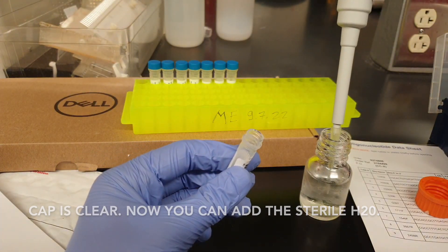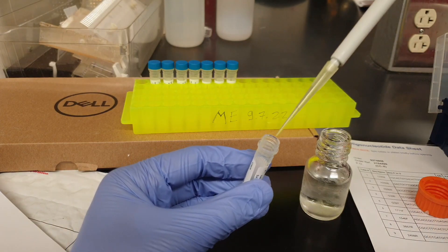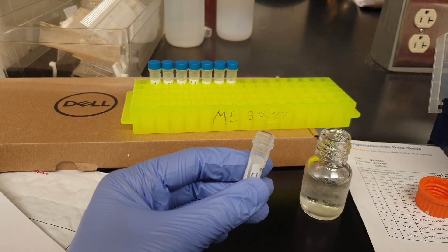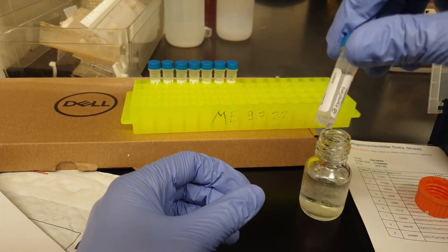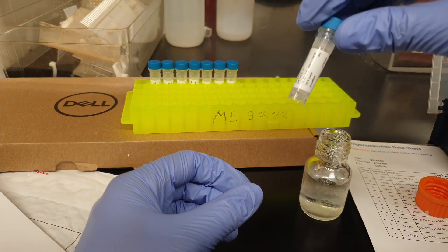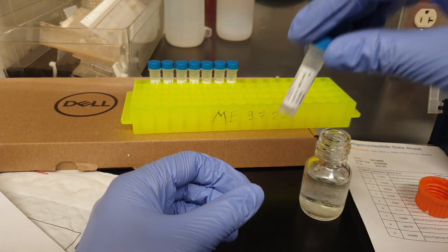So we can get 37 microliters of sterile water and pipette inside of that. Once you do that, close it, close the cap, and then there you go, this is your stock solution. We're gonna take this into centrifuge.